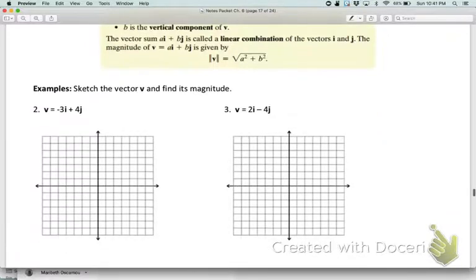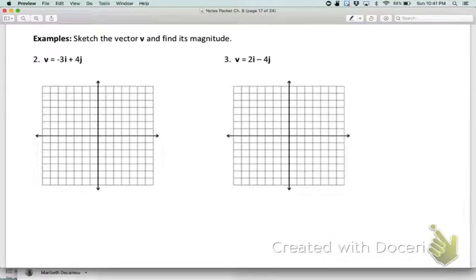Here's two examples of how we would interpret that. We want to sketch the vector v and find its magnitude. I'll do the first one with you, and then I want you to pause and try the second one. For example two, the vector is -3i + 4j. That means we need to go 3 in the negative x direction and 4 in the positive y direction.